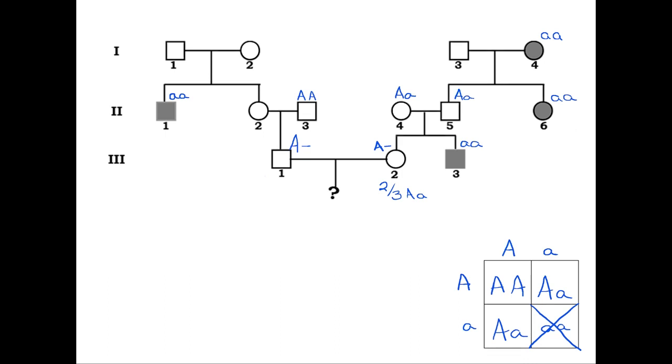His mother, individual 2-2, is not affected either. Her parents must both be heterozygous as they had an affected son. We can note on our pedigree that the paternal grandparents, 1-1 and 1-2, must both have been Aa, and their daughter, 2-2, must be A-.